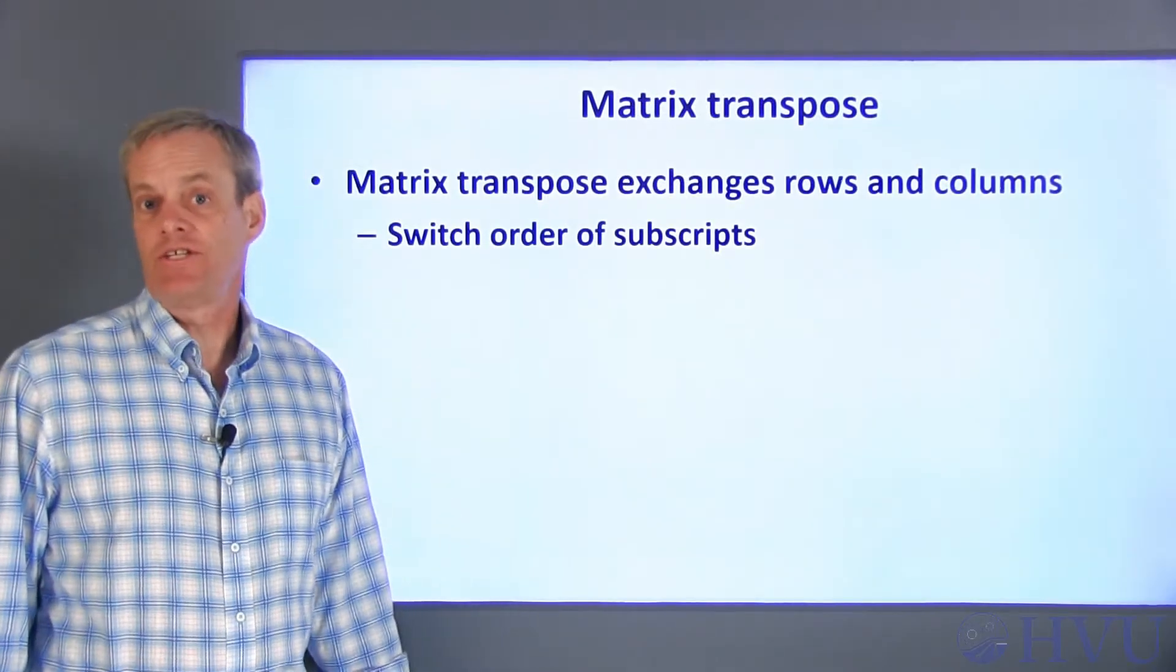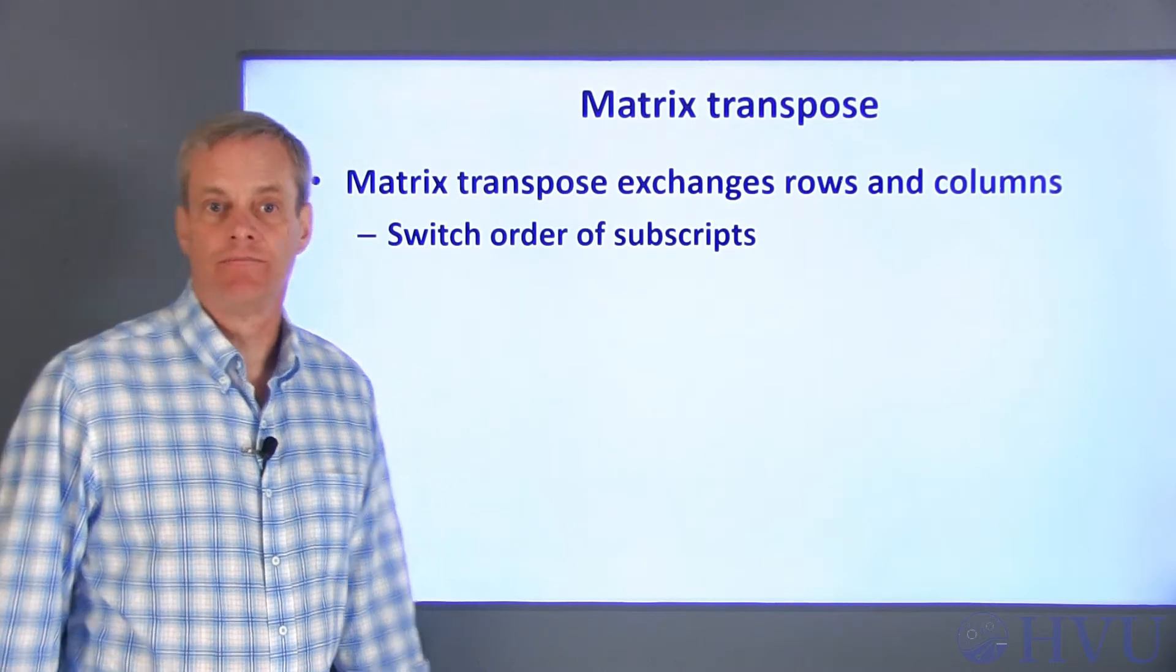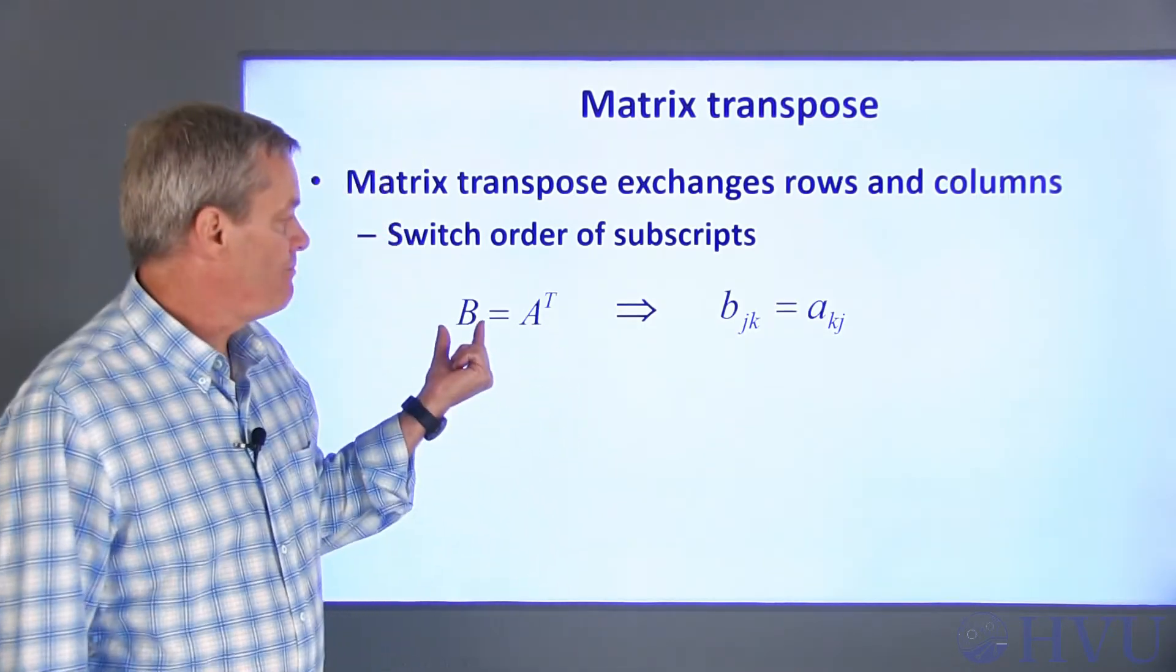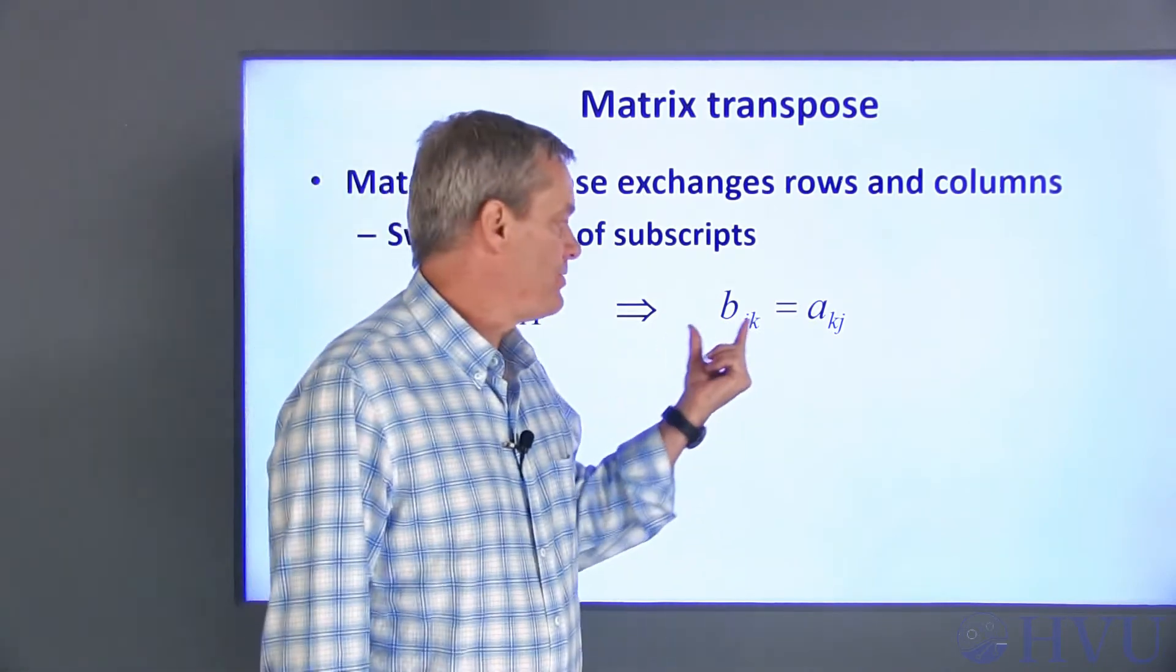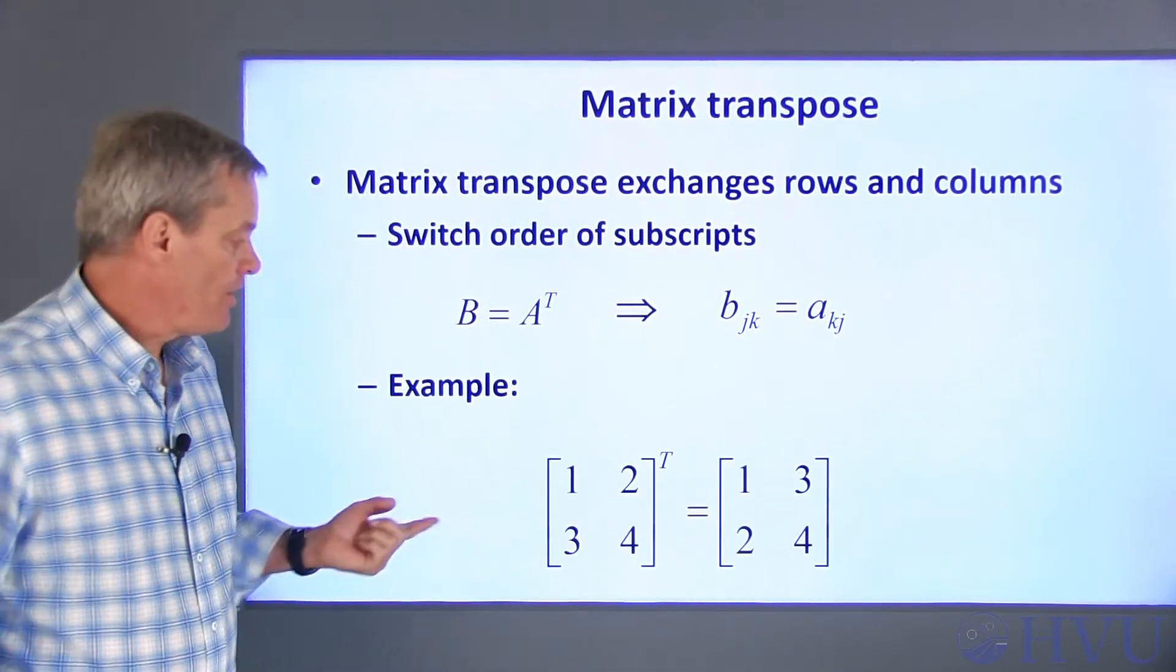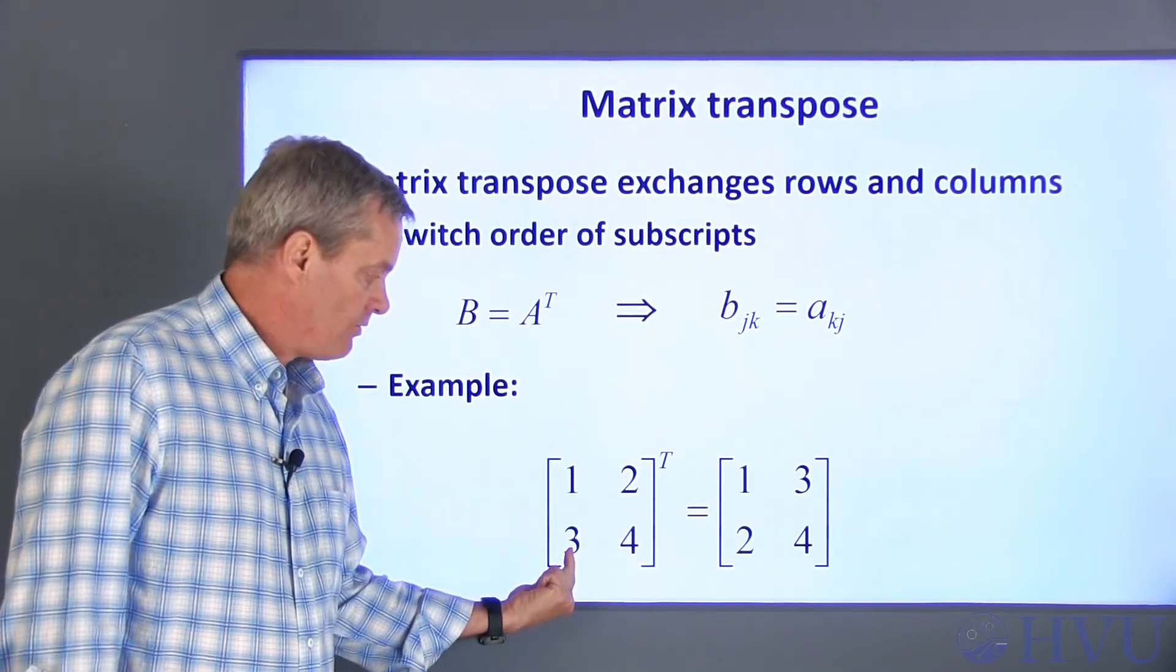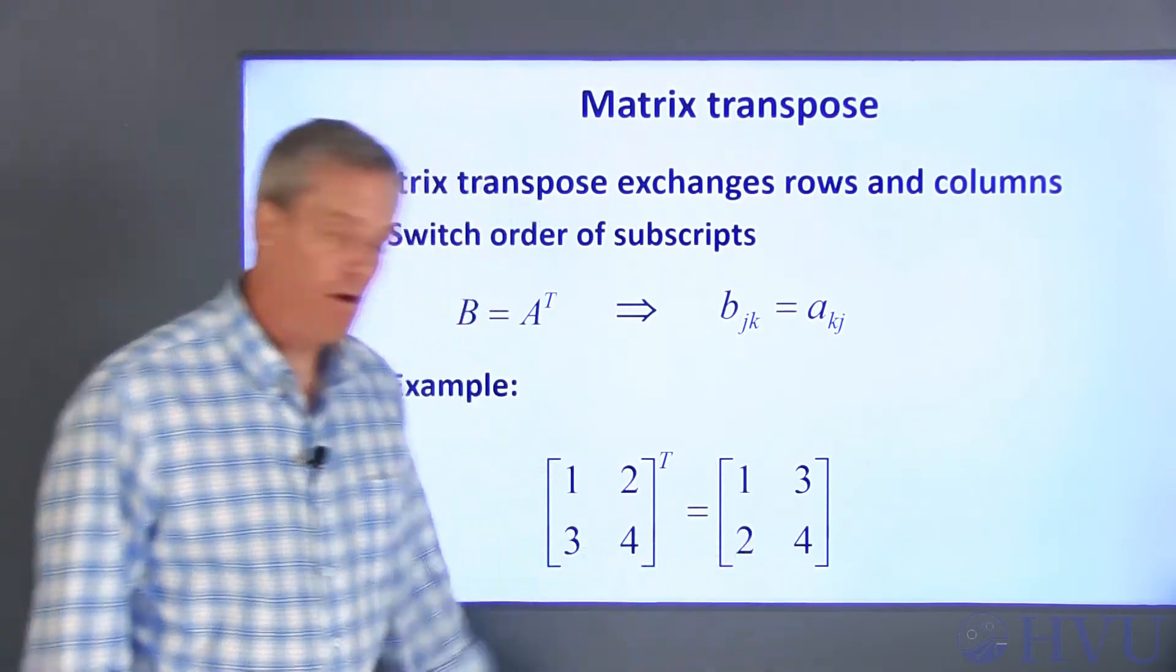Transposing an array simply changes the array subscripts so that the rows and columns of the array are exchanged. The symbol for transpose is a superscript T, so if B is the transpose of A, the subscripts of the B matrix are reversed. Rows become columns and columns become rows. So, if I transpose this array, the first column, 1, 3, will become the first row, the second column will become the second row.